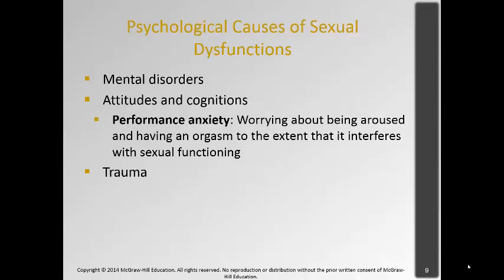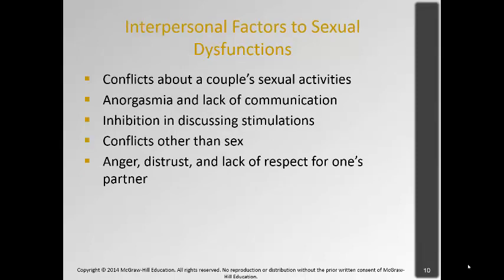There are also psychological causes of sexual dysfunction, such as mental disorders and attitudes and cognitions. A lot of premature ejaculation, pain disorders, and vaginal tightening are actually caused by anxiety or trauma. Worrying about arousal or orgasm to the extent that it interferes with sexual functioning happens in both males and females. If someone has been a victim of sexual assault, sex can be aversive and no longer desirable, and lack of lubrication can make sex very painful.